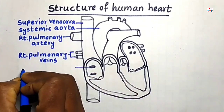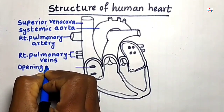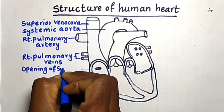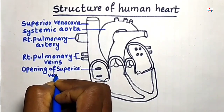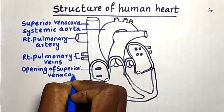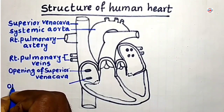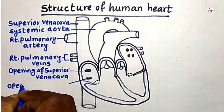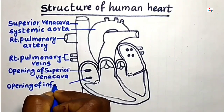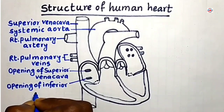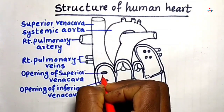This is called Opening of Superior Venakabha. This is called Opening of Inferior Venakabha. Right auricle.